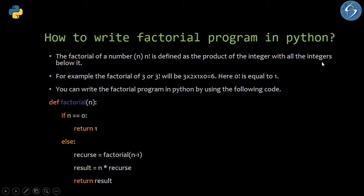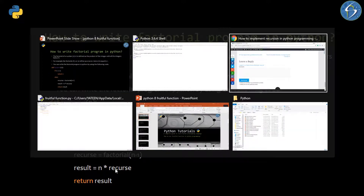A factorial of a number is defined as the product of the integer with all the integers below it. For example, factorial of 3 is 3 × 2 × 1 × 0, and zero factorial equals 1, so the result is 6. Here I am declaring a function named 'factorial' passing a parameter n. If n equals zero, return 1; otherwise, recurs equals factorial(n minus 1), and result equals n multiplied by recurs.